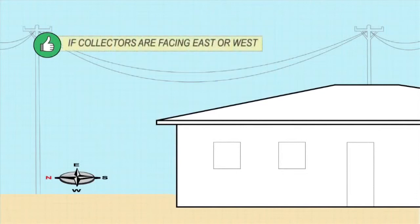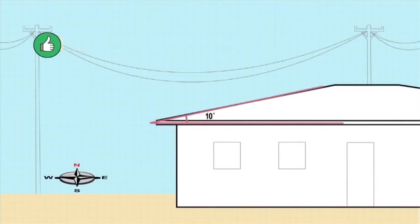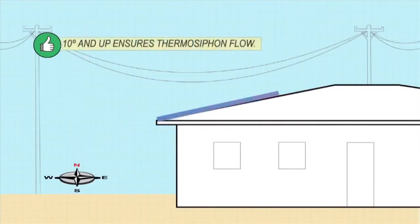If your collectors face due east or west, the lower the angle of inclination, the better. However, to allow thermosiphon flow, you must always keep the angle above 10 degrees.